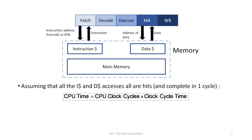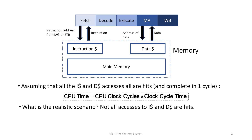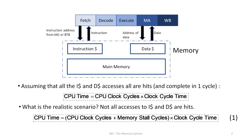Instruction and data caches are not perfect because of their limited size, so some accesses will be misses. The CPU performance equation can then be extended with a new term: memory stall cycles. These are the total number of cycles contributed by imperfect memory.